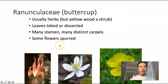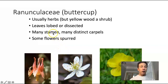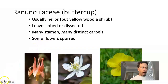Ranunculaceae — this is a quick review. These were the ones we talked about last week. They include buttercups. Some of the features we emphasized were the fact that they tended to have many stamens and also many distinct carpels.